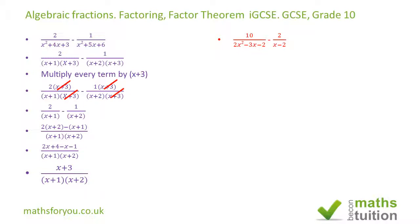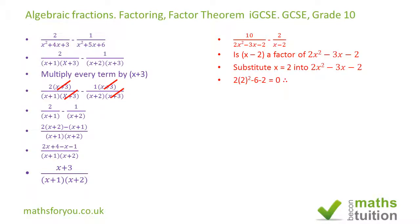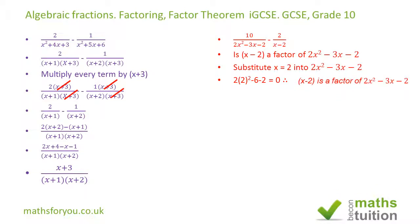To test that using the factor theorem, if I equate x - 2 to 0 we get x = 2, then substitute x = 2 into the denominator: 2 times 2² is 8, and 8 minus 6 is 2, and 2 minus 2 equals 0. It then follows that (x-2) is a factor of 2x² - 3x - 2.